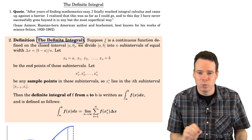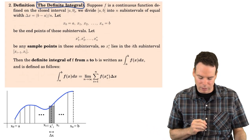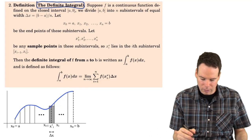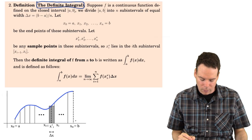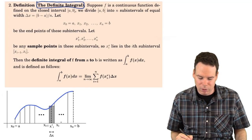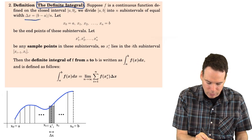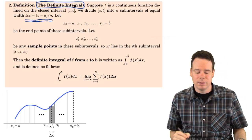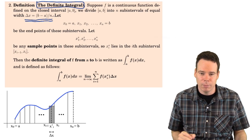Suppose we start with a continuous function f on an interval from a to b, and we slice the interval a to b up into n sub-intervals of equal width. We'll call the width delta x, which equals b minus a over n — the length of the interval divided by n.